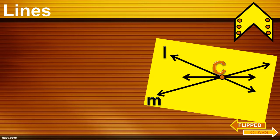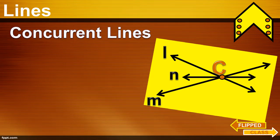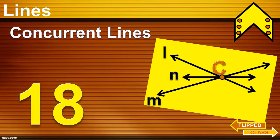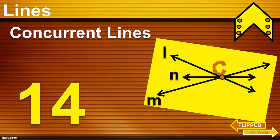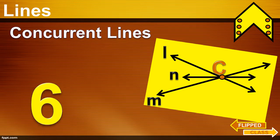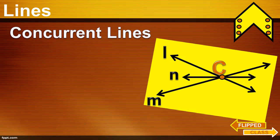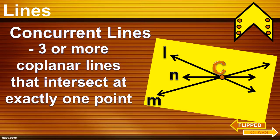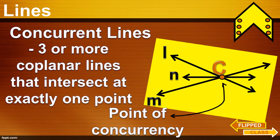How about if I would add another line here? Let's say line N, passing through the same point, C. Now, they are not just called intersecting, but they are called concurrent lines. In 20 seconds, define concurrent lines. Time is up. How did you define concurrent lines? Yes, 3 or more co-planar lines that intersect at exactly one point. There are 3 or more lines, and there is only one point of concurrency. Instead of calling it point of intersection, it is point of concurrency.